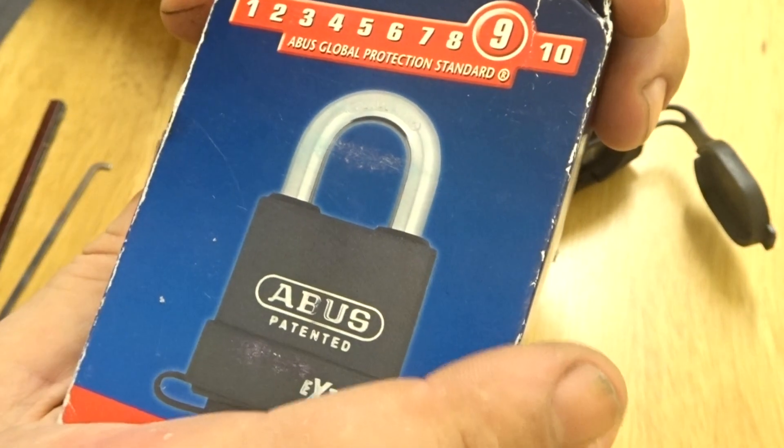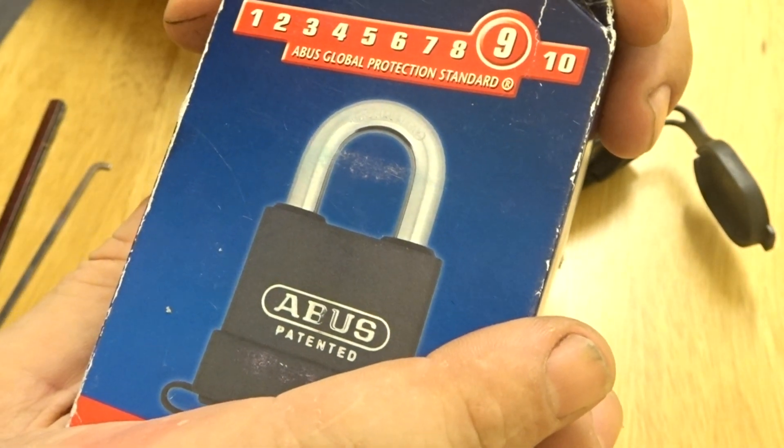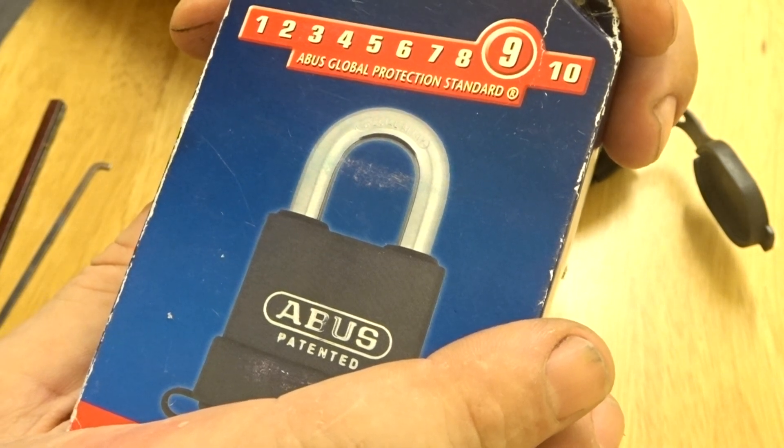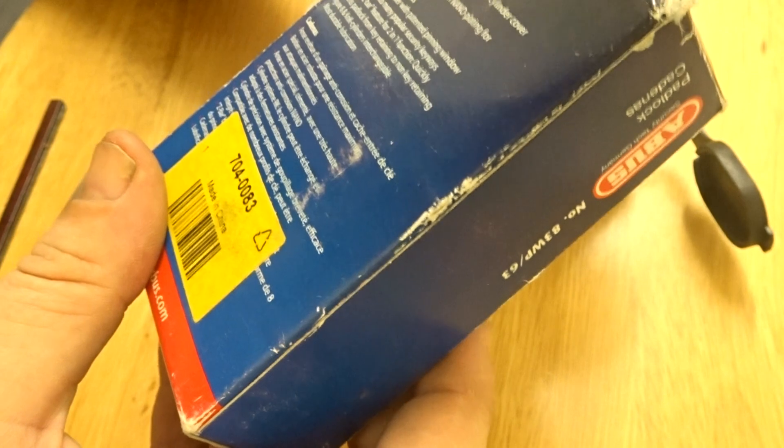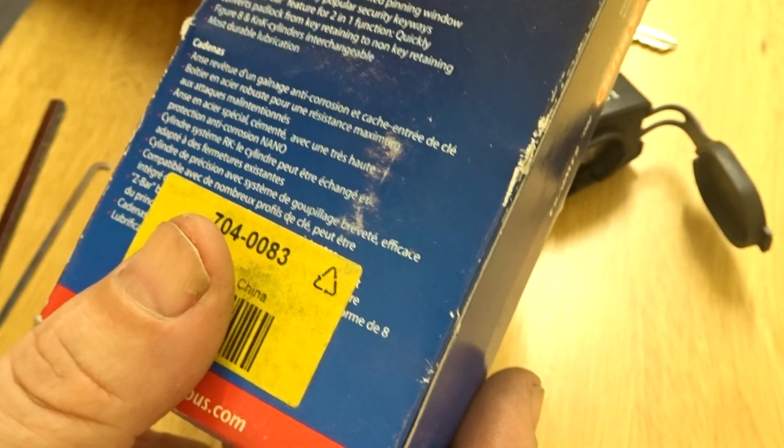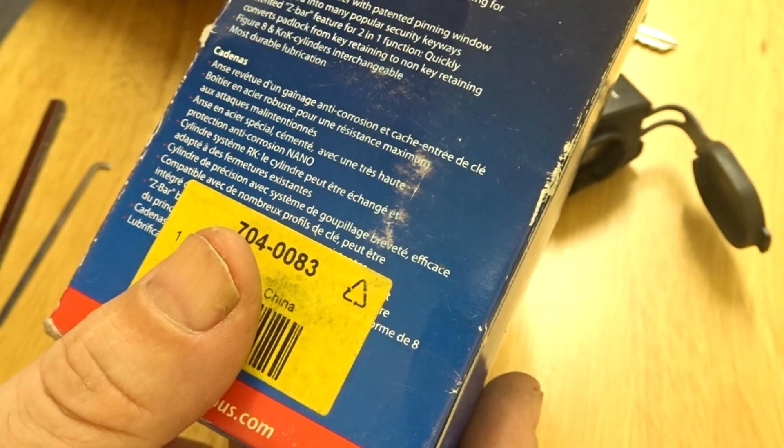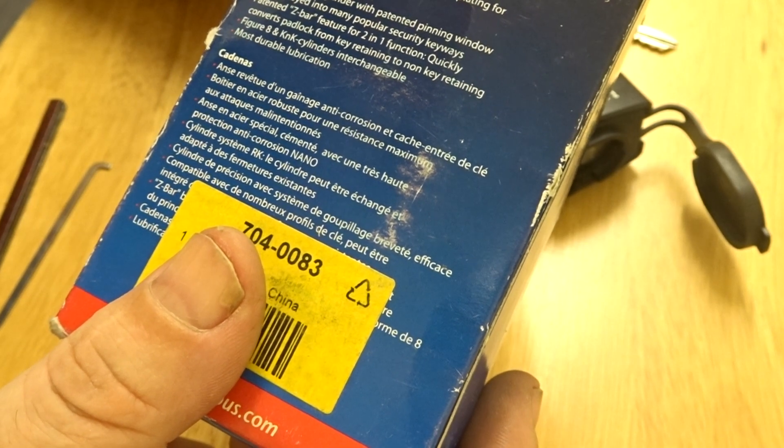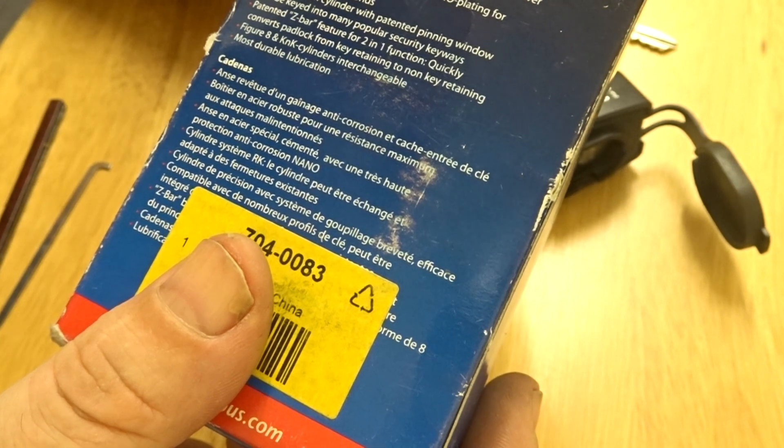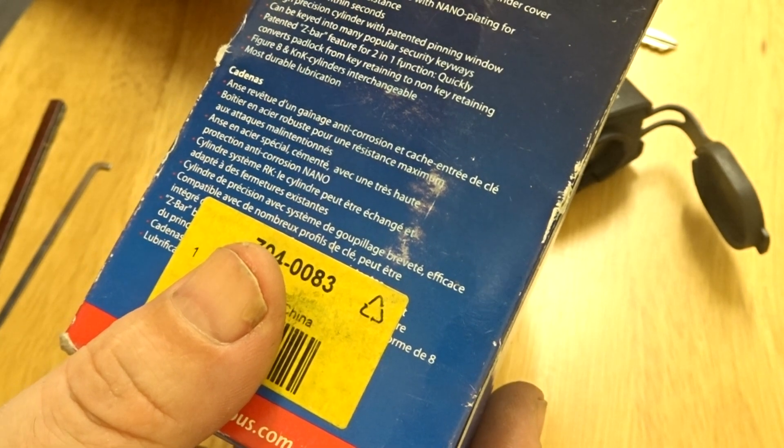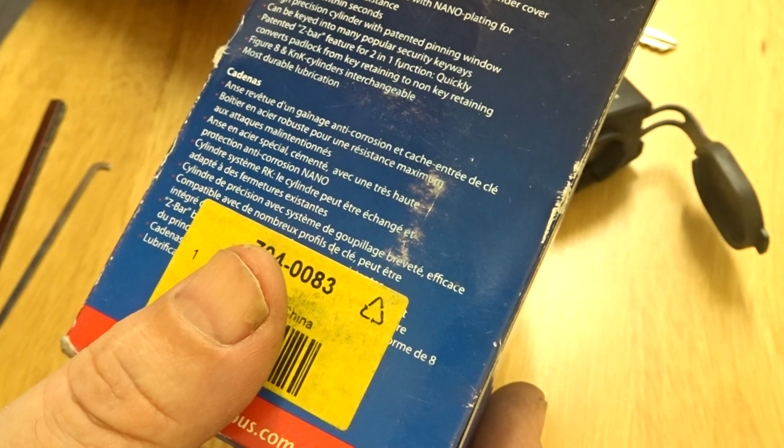Well Abus global protection standard is nine and it's 83/63. On the back we have fully weather protected with shackles, seals and cylinder covers. Solid steel core for maximum strength. The special hardened alloy shackle with nano plating for the ultimate corrosion resistance.